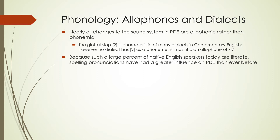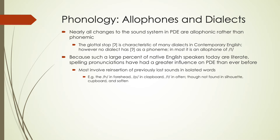Because such a large percentage of native English speakers today are literate, spelling pronunciations have had a greater influence on present-day English than in previous time periods. What used to happen is people knew how to pronounce things and wrote based on speech. But now with our codified spelling system, spelling ends up affecting pronunciation. Most involve the reinsertion of lost sounds — the H in 'forehead,' the P in 'clapboard,' the T in 'often' which some people pronounce but not everyone. However, you don't find this in all words — there's still no H in 'silhouette,' no P in 'cupboard,' and no T in 'soften.'